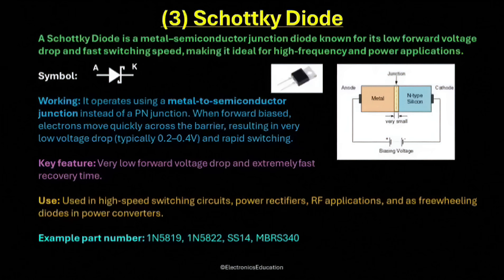In power supply circuits, Schottky diodes are used as rectifiers to convert AC to DC with minimal losses. They are also used as freewheeling diodes in power converters where they allow current to circulate smoothly when the switching device turns off. In digital logic circuits and radio frequency applications, their fast switching ability makes them ideal for signal detection and high-speed switching. Common part numbers for Schottky diodes include 1N5819, 1N5822, SS14, and MBRS340.